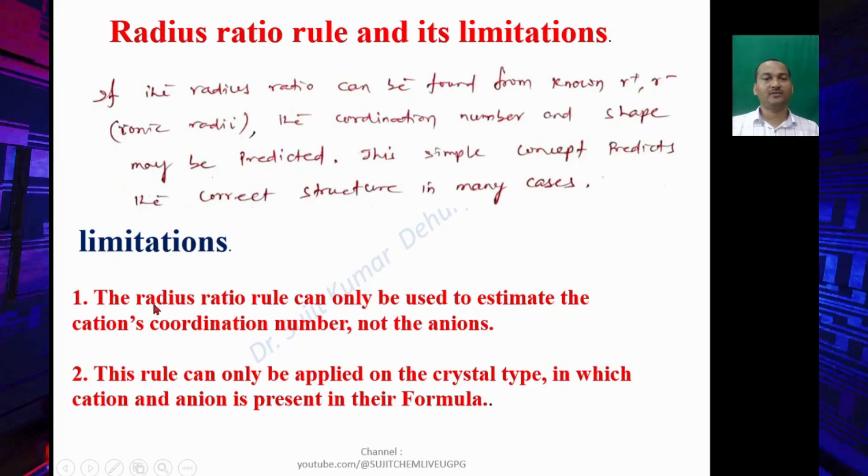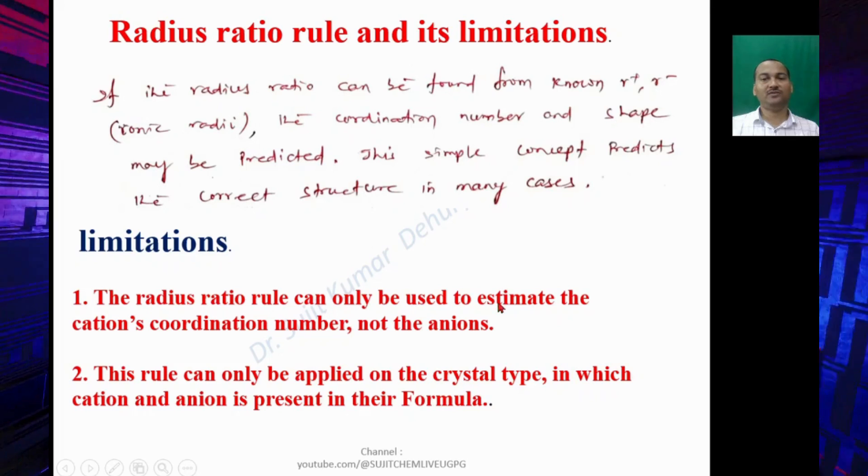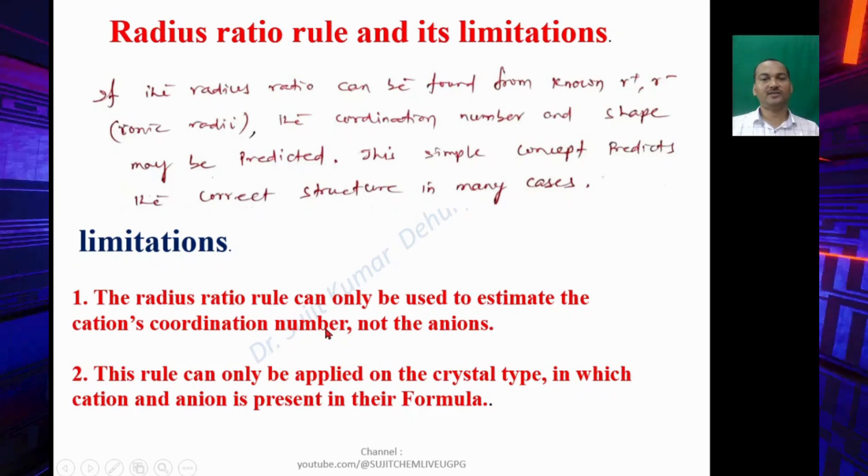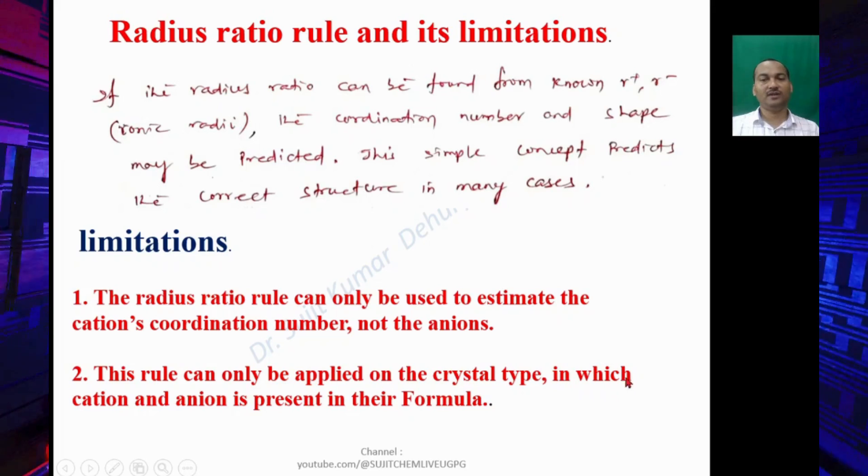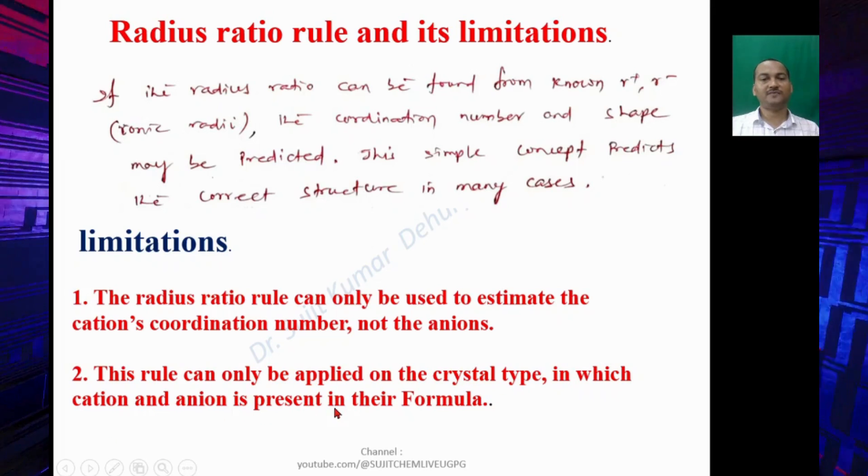The radius ratio rule can only be used to estimate the cation's coordination number, not for the anion. This rule can only be applied on the crystal type in which the cation and anion are present in their formula.